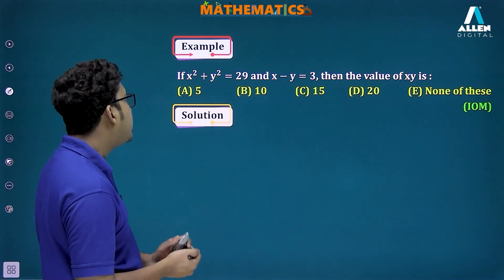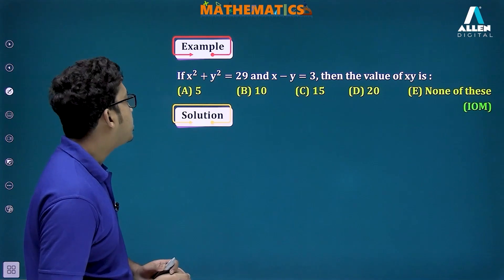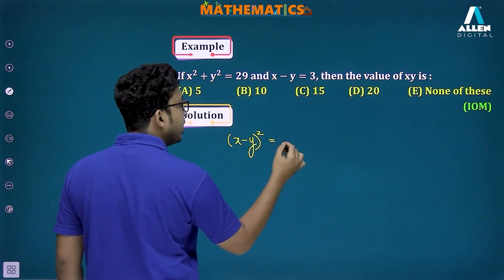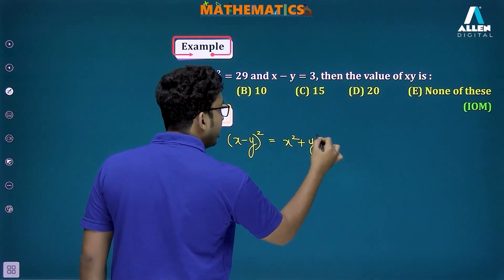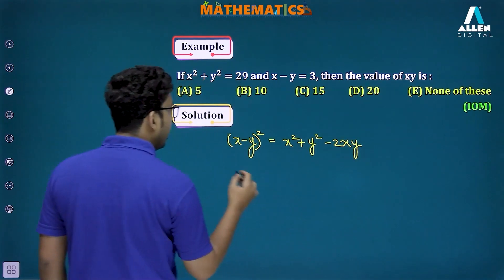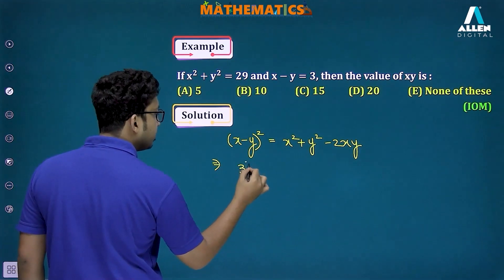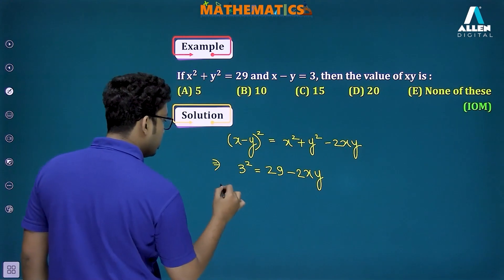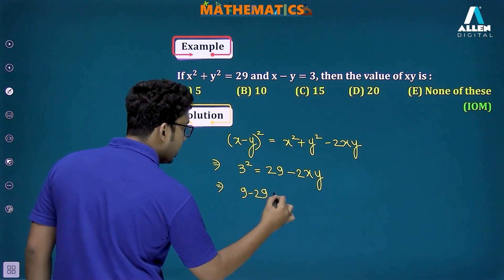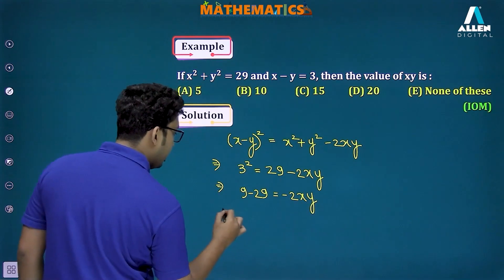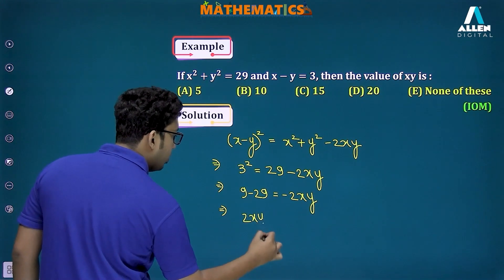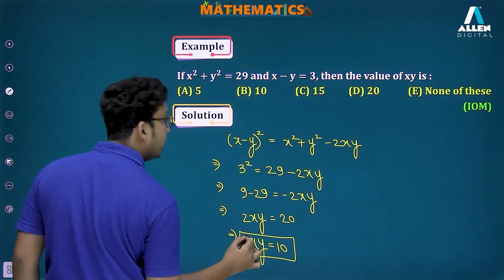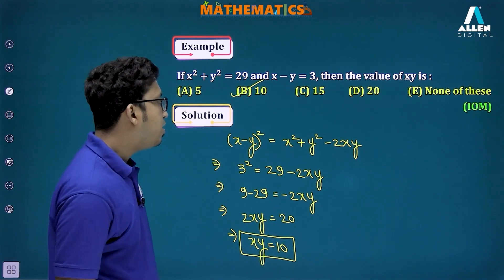Next question: x²+y²=29 and x-y=3, find xy. Square x-y: (x-y)² = x²+y²-2xy. So 3² = 29-2xy, giving 9 = 29-2xy, and 2xy = 20, therefore xy = 10. Option B is the correct answer — this is how we can solve such questions with good speed and accuracy.